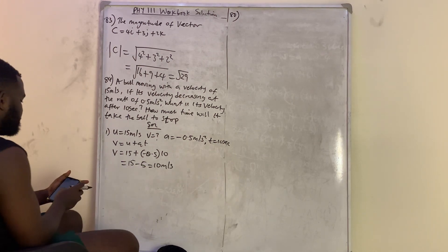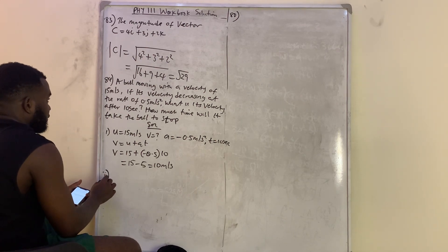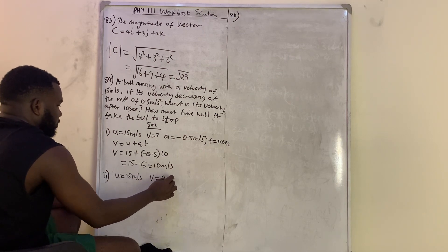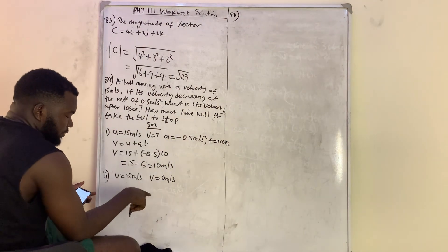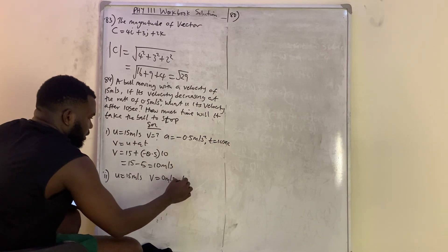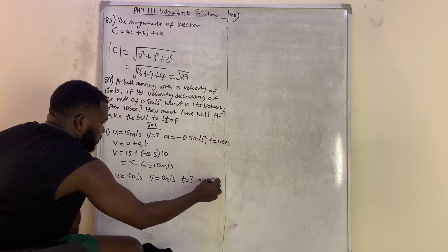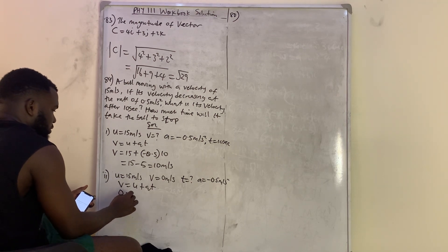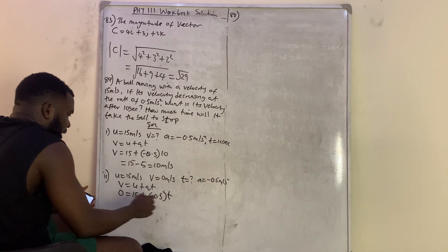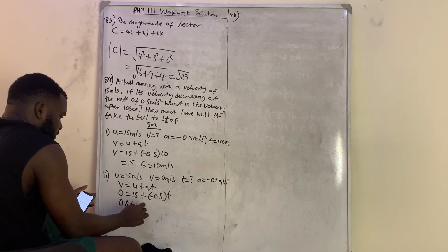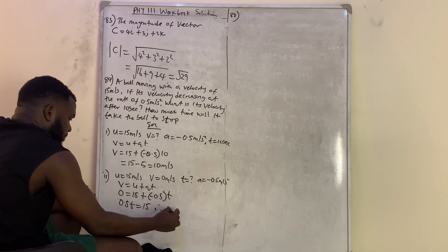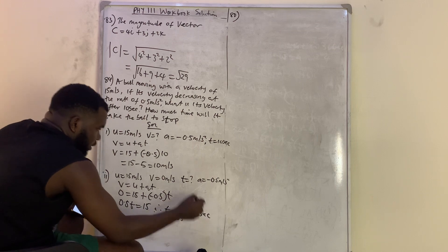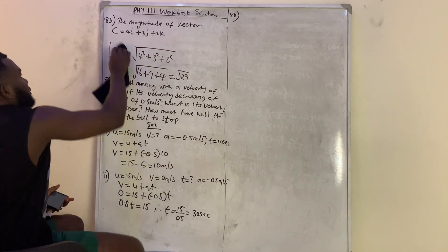For the second question, the initial velocity remains 15 m/s but the final velocity is zero because we want the time when the ball stops. Using v equals u plus at: zero equals 15 plus (minus 0.5) times t. So 0.5t equals 15, therefore t equals 15 divided by 0.5, which gives 30 seconds. The ball will stop at 30 seconds.